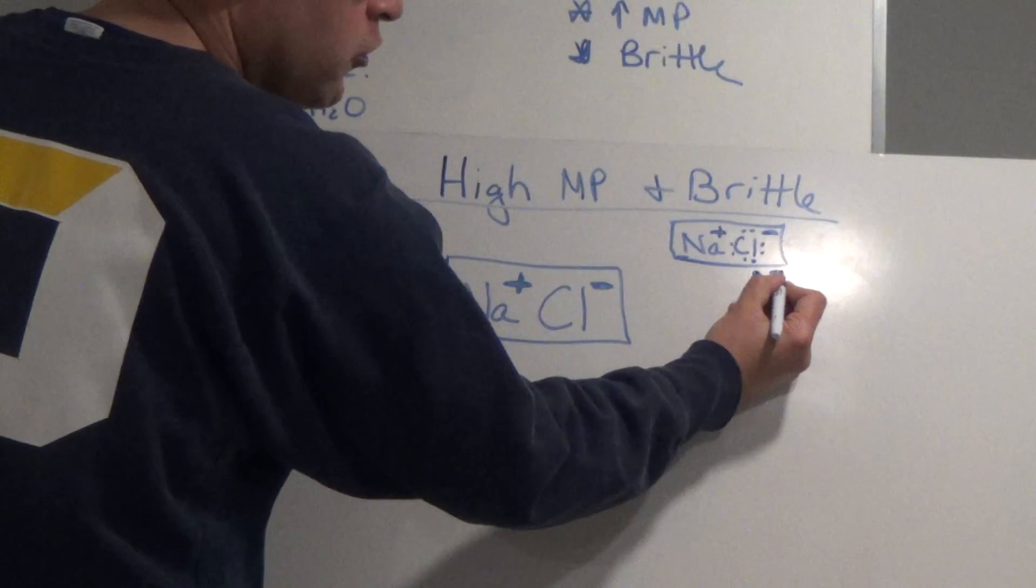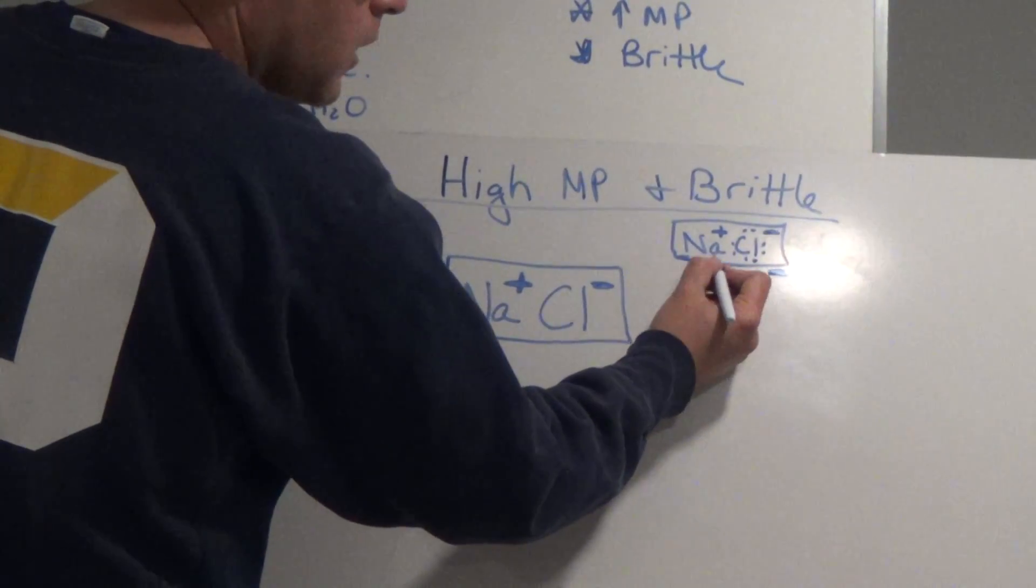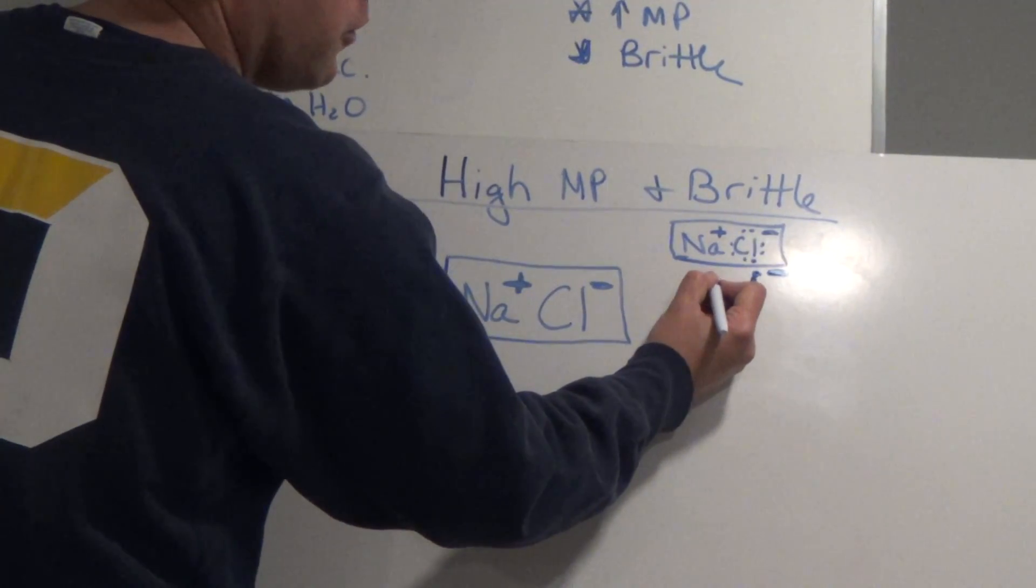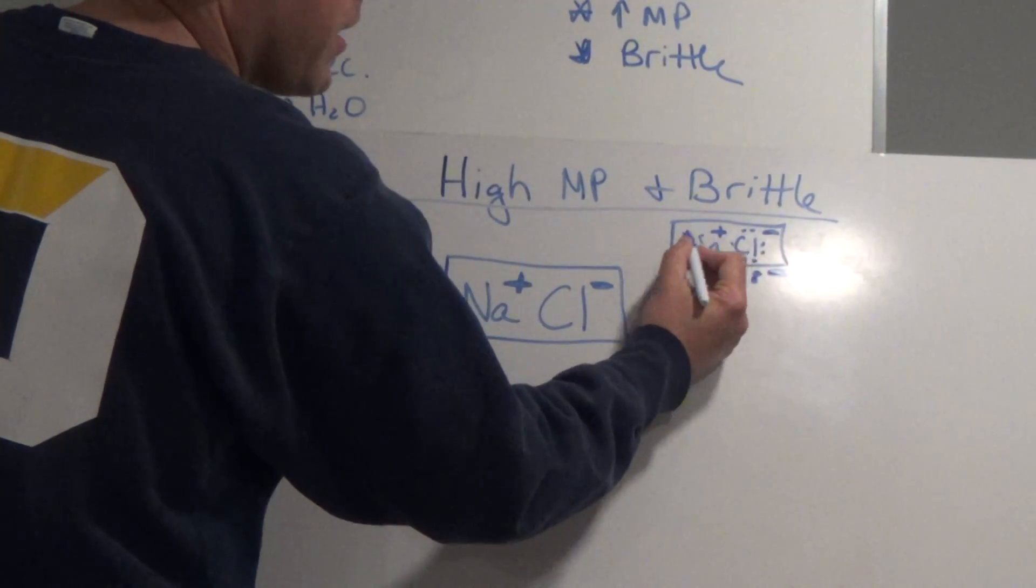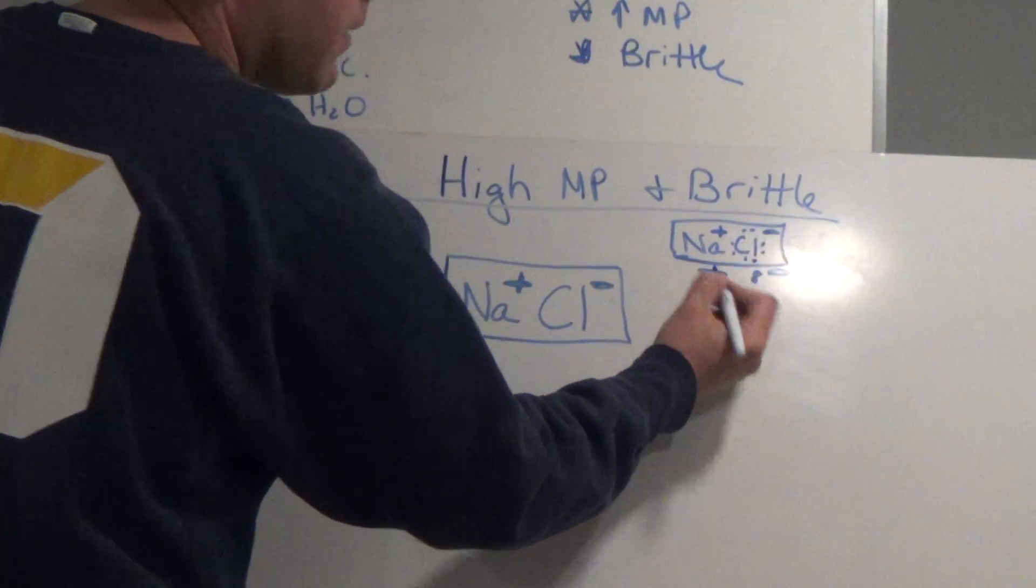So it is stupidly negative. Sodium lost its valence electron, so it has eight in a smaller energy level, but it lost one, so it is stupidly positive.